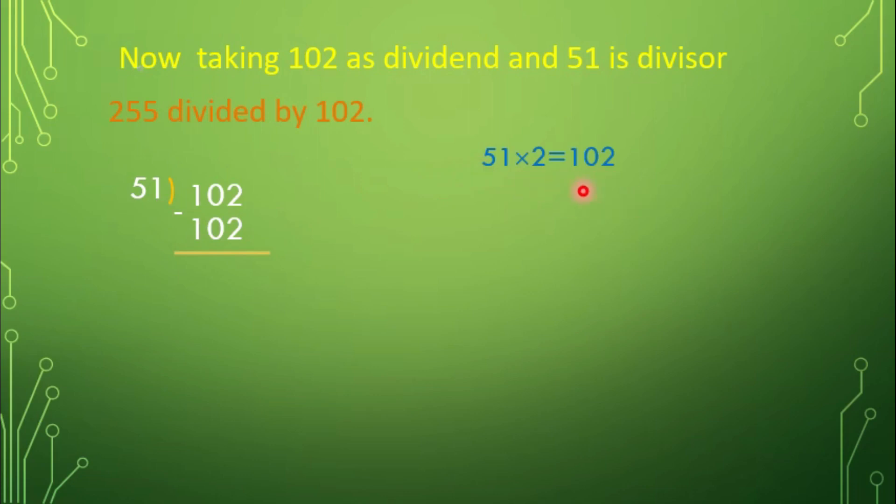Repeating the same step we get, now taking 102 as dividend and 51 is divisor. 102 divided by 51. 51 multiplied by 2 is 102. So, here, quotient is 2 and remainder is 0.